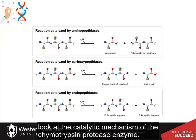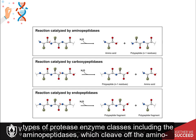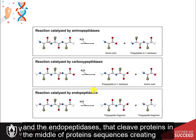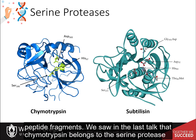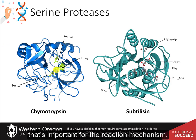In the last lecture, we took a look at the catalytic mechanism of the chymotrypsin protease enzyme. I just wanted to end that section discussing some comparisons about some other major types of protease enzyme classes, including the aminopeptidases, which cleave off the aminoterminal residue, carboxypeptidases, which cleave off the carboxyterminal residue, and the endopeptidases that cleave proteins in the middle of protein sequences, creating peptide fragments. We saw in the last talk that chymotrypsin belongs to the serine protease class of endopeptidases and contains a catalytic triad that's important for the reaction mechanism.